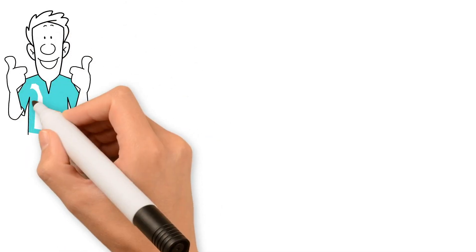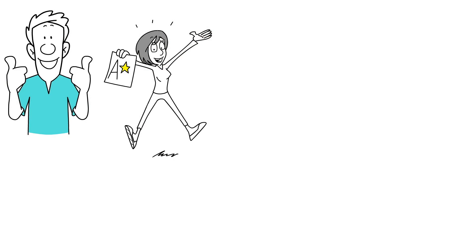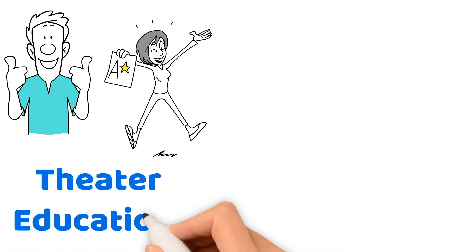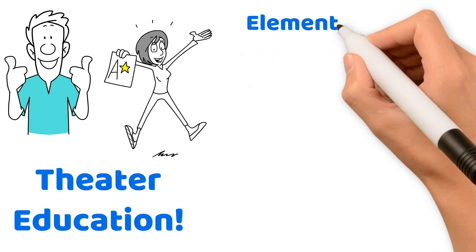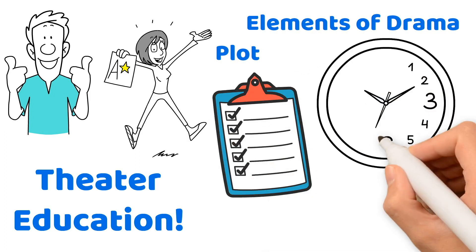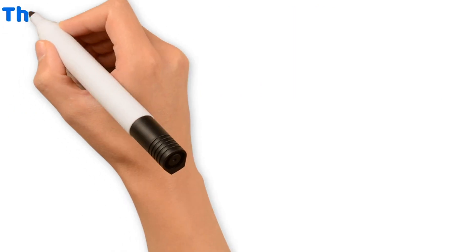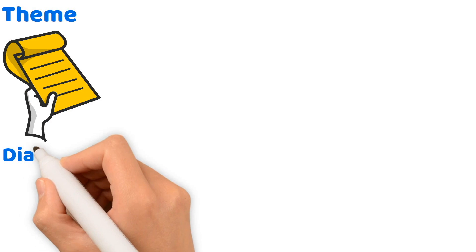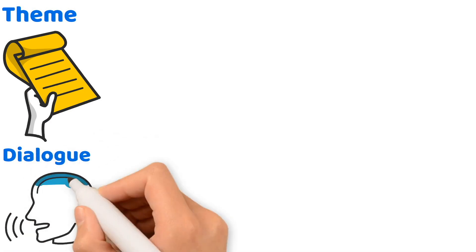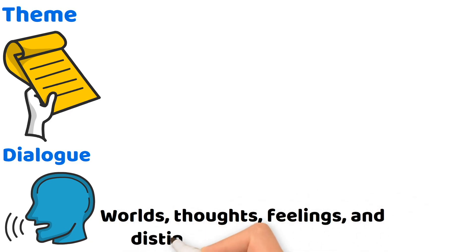Hello, future teacher. Let's set the stage for helping you pass your teacher certification exam with this test prep lesson all about theater education. Starting with elements of drama: the plot is the backbone of any theatrical piece — the sequence of events that rivets the audience's attention from start to finish. The theme is the underlying moral or message woven throughout the play. Dialogue consists of those carefully crafted words spoken by characters that reveal their inner worlds, thoughts, feelings, and distinctive personalities, one line at a time.